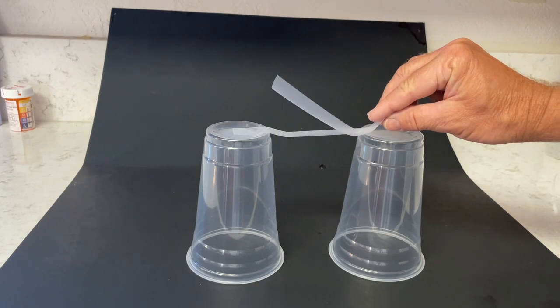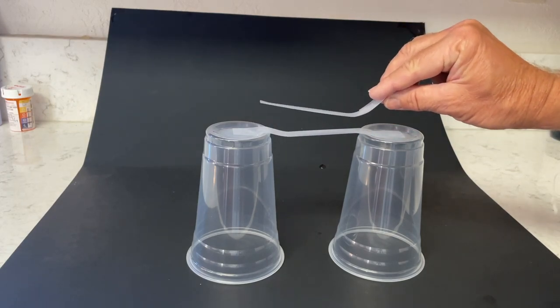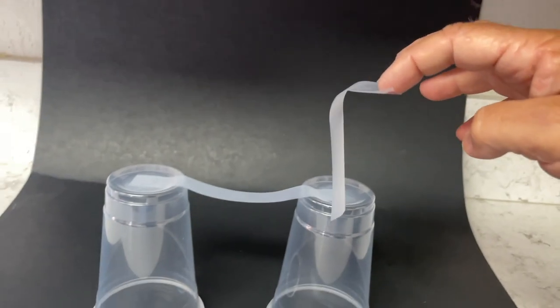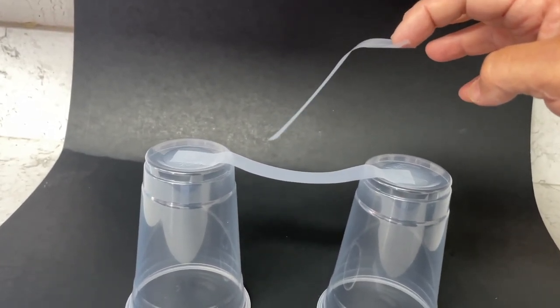So both pieces of tape have electrons that are negatively charged. When I put the two pieces of tape close to each other, as you saw in the experiment, they repel each other.